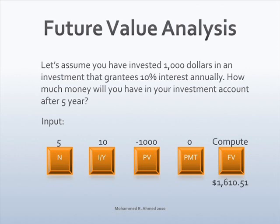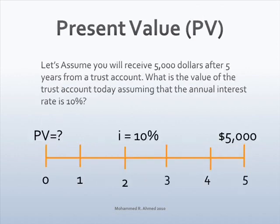Using a financial calculator such as Texas Instruments or HP, enter the data in the following order: enter 5, press the N key; enter 10, press the I/Y key; enter 1000, press the plus/minus key, then the present value key; enter zero, press the payment key; press the compute key and then the future value key for Texas Instruments, or just press future value for HP. The answer is $1,610.51. If you invest $1,000 at 10% for five years, at the end of five years you will have $1,610.52 in your bank account.